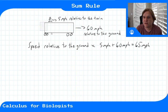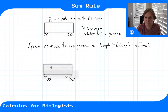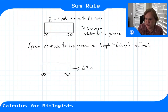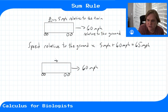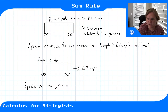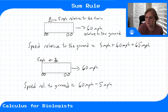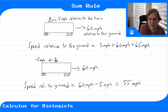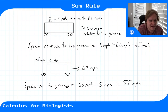If he was running the other direction — here's my train moving this way at 60 miles per hour, and my little guy is running towards the back of the train at five miles per hour — then his speed would be the subtraction of it. His speed relative to the ground would be 60 miles per hour forward minus five miles per hour, which equals 55. As he runs towards the back of the train, his speed is technically slowing down relative to the ground.